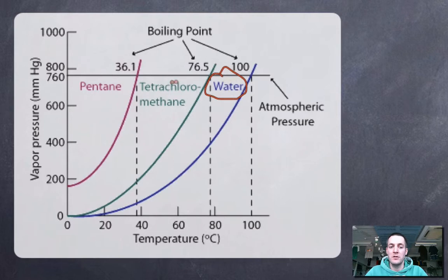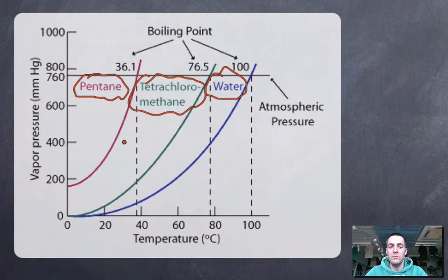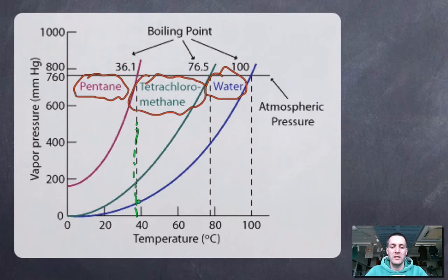Consider water — a polar molecule that hydrogen bonds — tetrachloromethane, which is non-polar but has a fairly high molecular mass, and pentane, which is non-polar with quite a low molecular mass. At any chosen temperature — say about 36.1°C — water has the lowest vapor pressure because it can hydrogen bond.